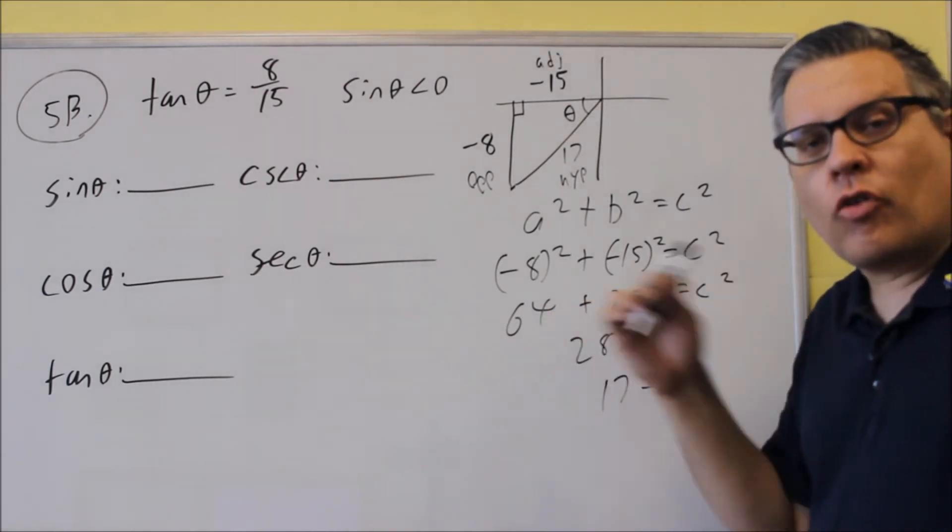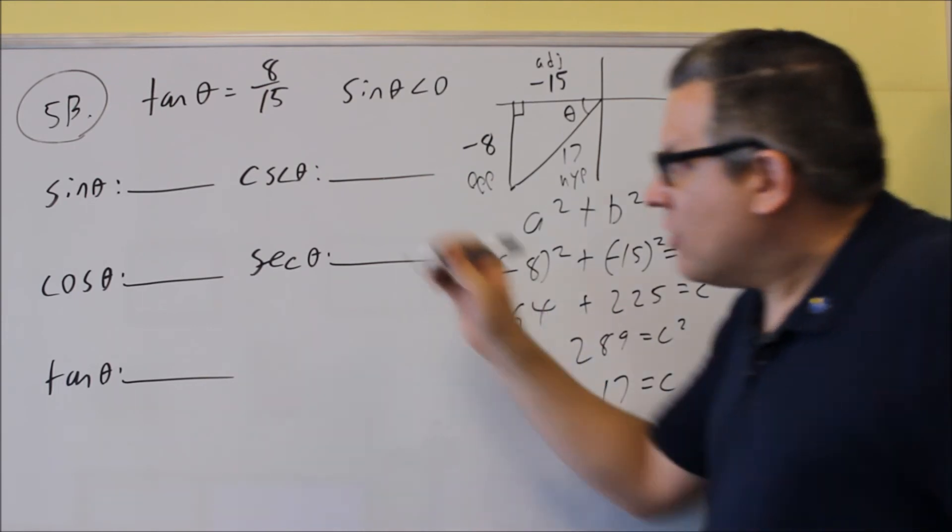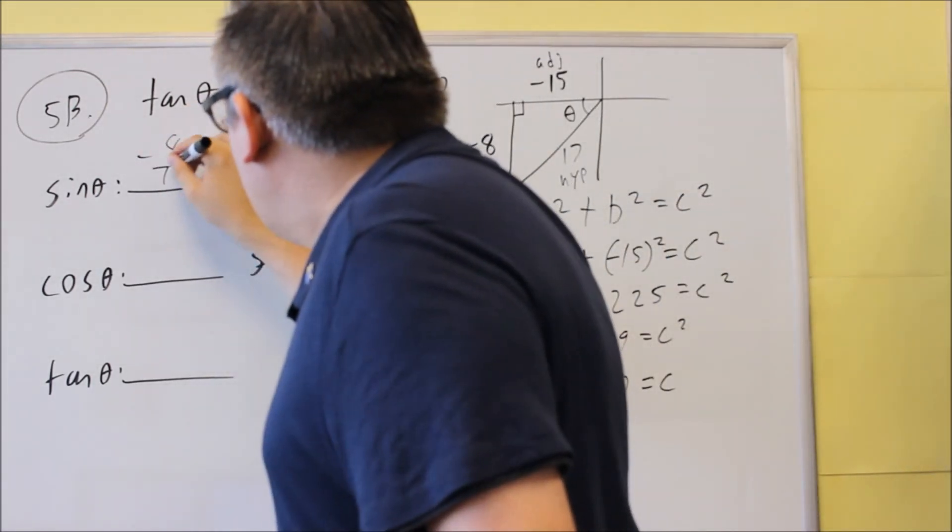Sine is equal to opposite over hypotenuse. So opposite would be negative 8 over hypotenuse 17. So negative 8/17.